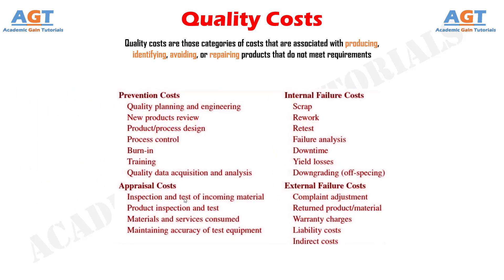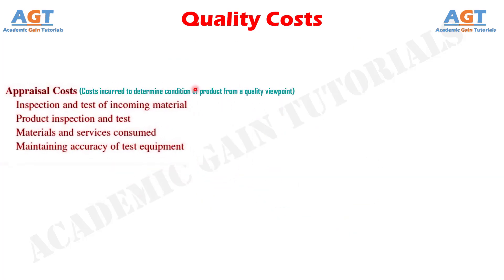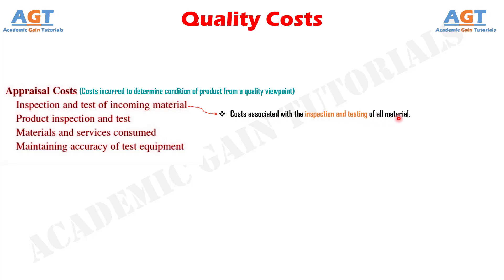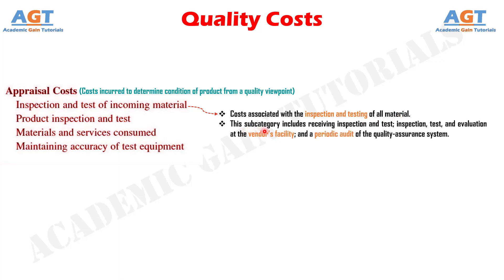After prevention costs, we need to discuss appraisal costs. Appraisal costs are those costs associated with measuring, evaluating, or auditing products, components, and purchased materials to ensure conformance to the standards that have been imposed. These costs are incurred to determine the condition of the product from a quality viewpoint and ensure that it conforms to specifications. The major subcategories include Number 1, inspection and test of incoming material — costs associated with the inspection and testing of all material, including receiving inspection and test, inspection and test at the vendor's facility, a periodic audit of the quality assurance system, and intraplant vendors.